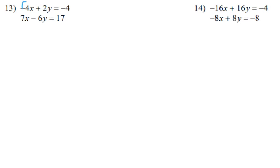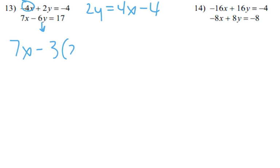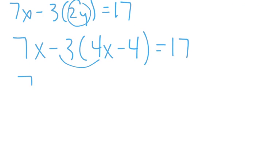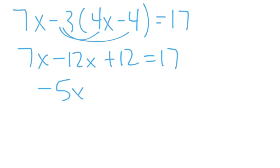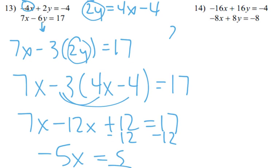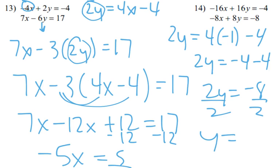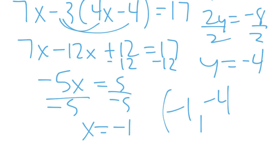Number 13: I add 4x to both sides, getting 2y equals 4x minus 4. Noticing the other equation has 6y, which is 3 times 2y, I substitute: 7x minus 3 times (4x minus 4) equals 17. Multiplying: 7x minus 12x plus 12 equals 17. Combining: negative 5x equals 5. Divide by negative 5: x equals negative 1. Plugging in: 2y equals negative 4 minus 4, so 2y equals negative 8, and y equals negative 4. Answer: negative 1, negative 4.